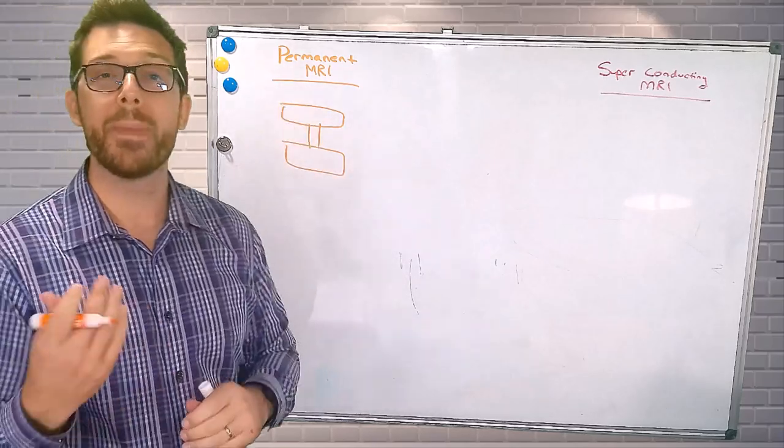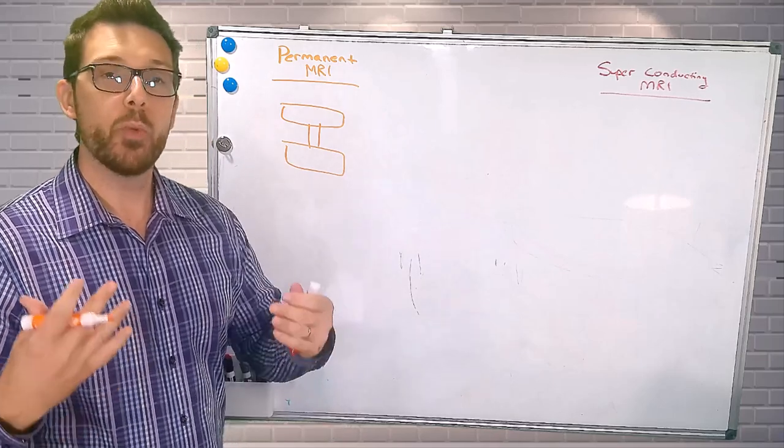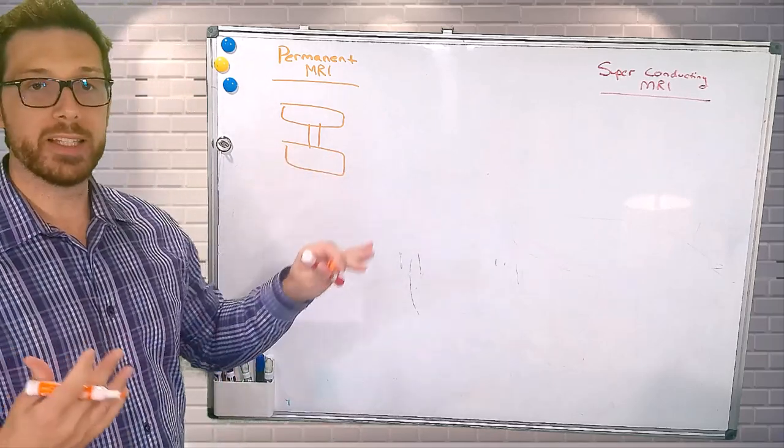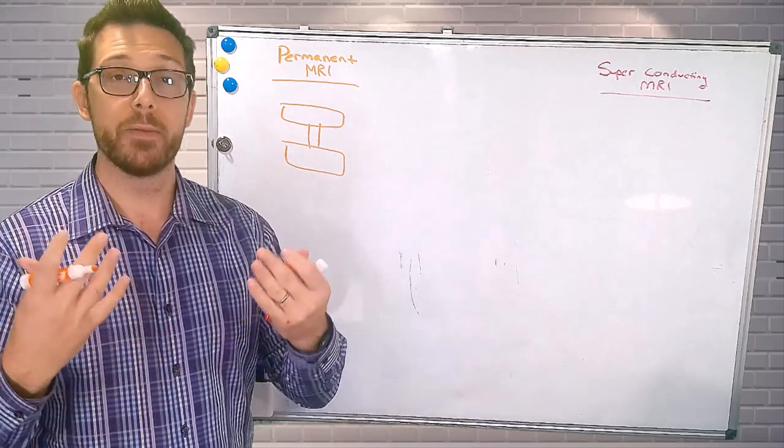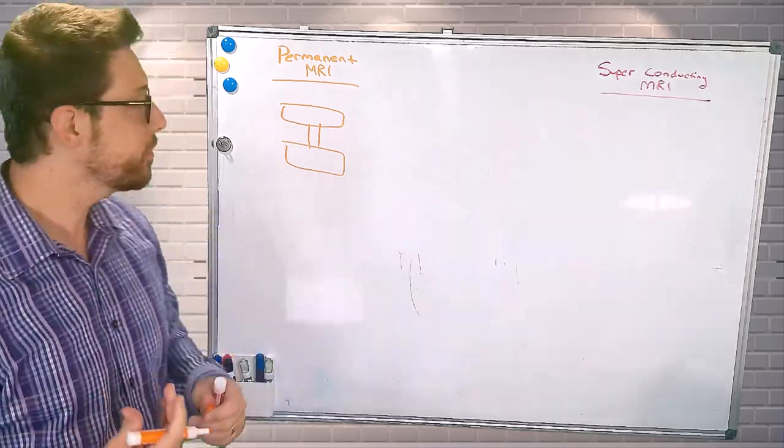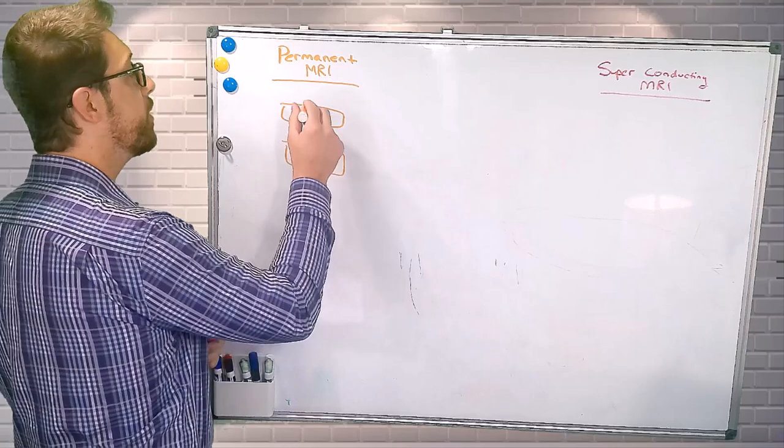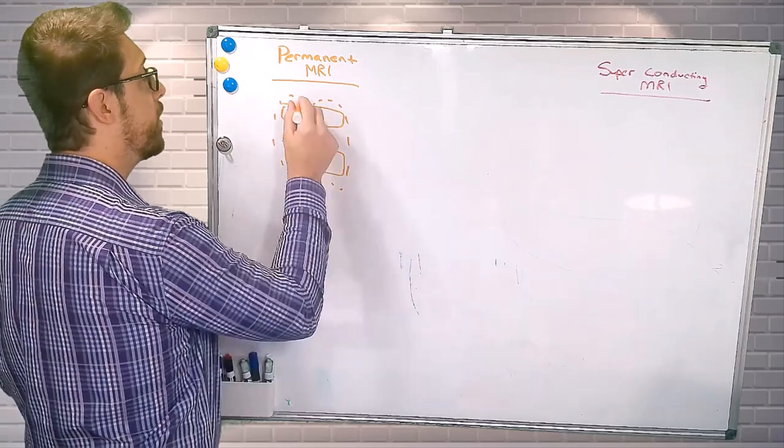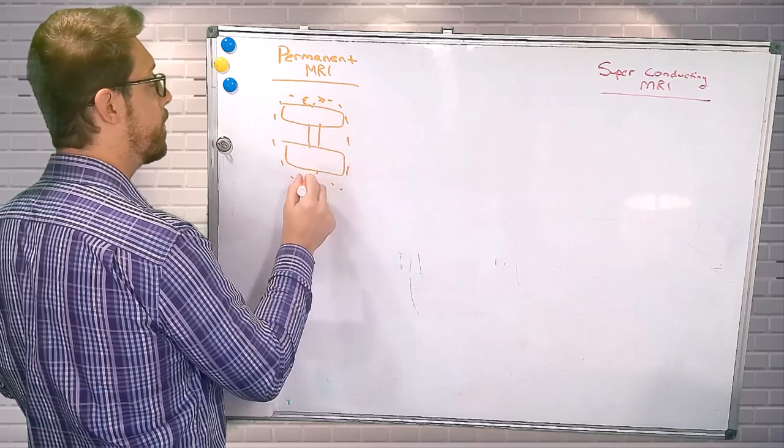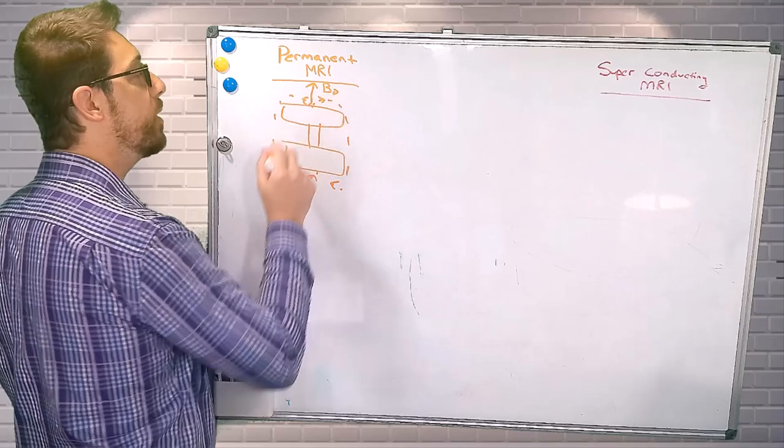These permanent MR units, what makes them unique is how the B0 is formed. When we look at an MRI unit along these lines, we look at it as any other magnet. A magnet has lines of flux traveling from the north to south pole. On a permanent MR unit, we find these lines traveling vertically, so we've got a vertical B0 with these MR units.